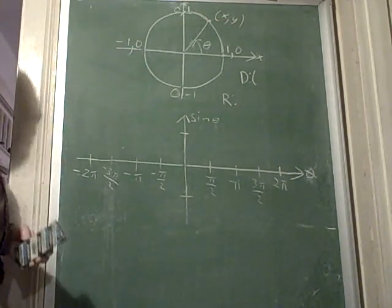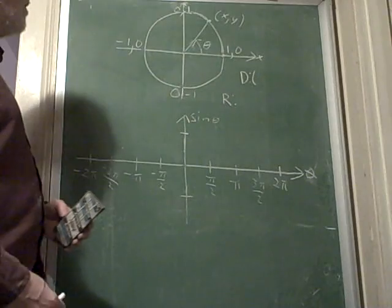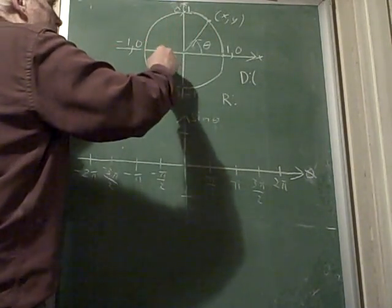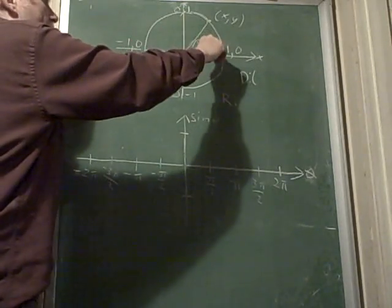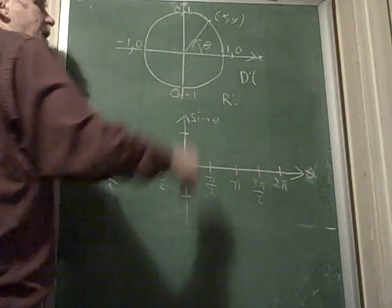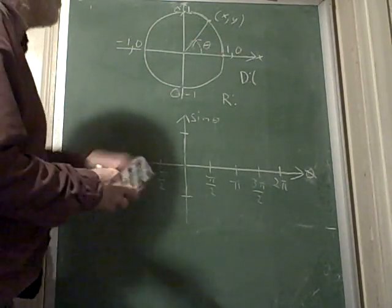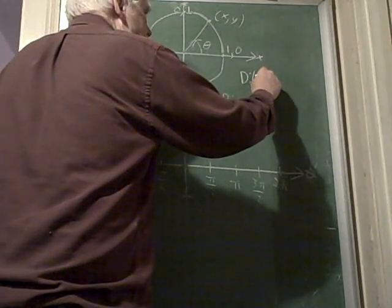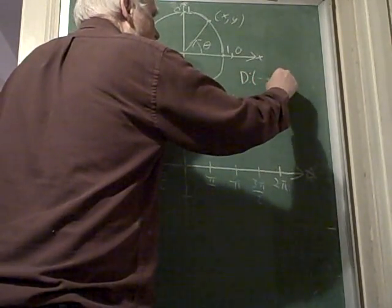So the domain, obviously, theta can go around 2 pi and keep going around and around forever. Or it can go negative and go around and around forever. And the whole thing repeats every 2 pi units, whether you go this way or go this way. So my domain really, in terms of theta, is negative infinity all the way to infinity.